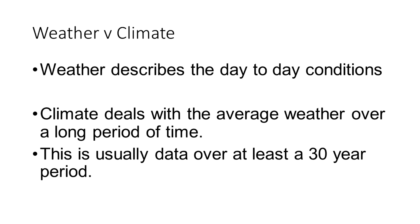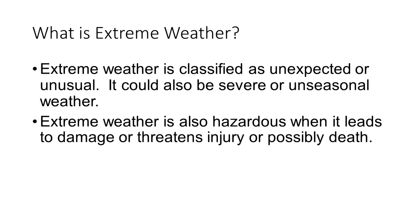Let's jump into what we mean by extreme weather, starting with the difference between weather and climate. Weather describes the day-to-day conditions, whilst climate deals with the average weather over a long period of time — usually data over at least a 30-year period.